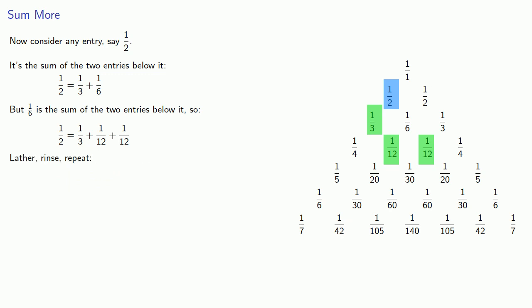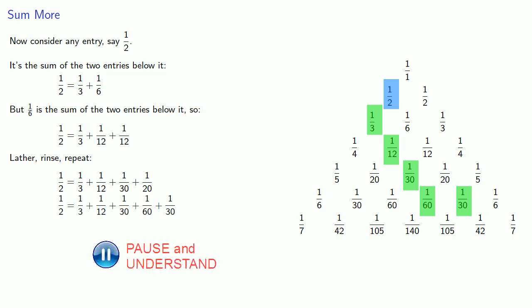But lather, rinse, repeat. 1 twelfth is the sum of the two entries below it, 1 thirtieth and 1 twentieth. 1 twentieth is the sum of the two entries below it, 1 sixtieth and 1 thirtieth. 1 thirtieth is the sum of the two entries below it and so on.